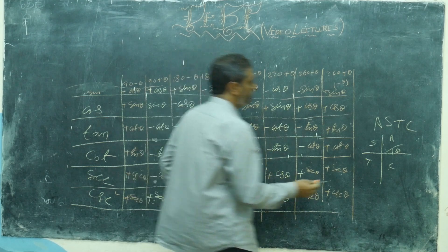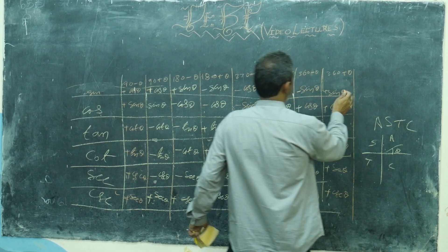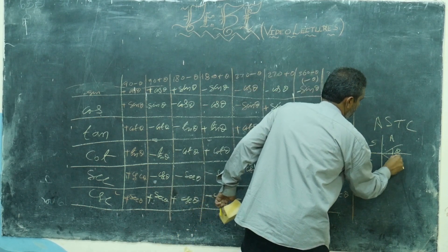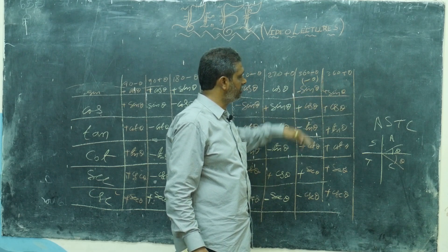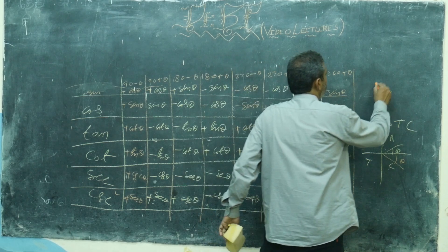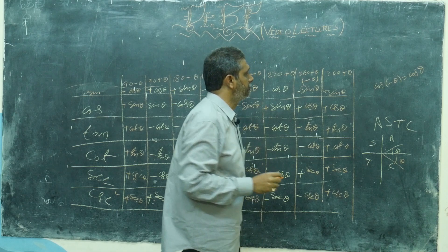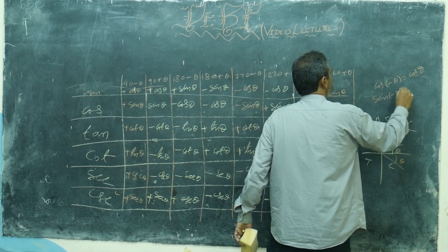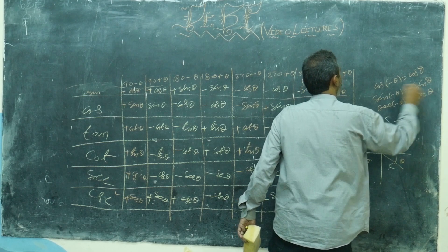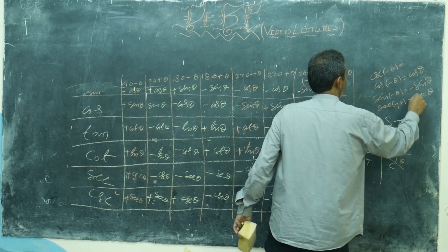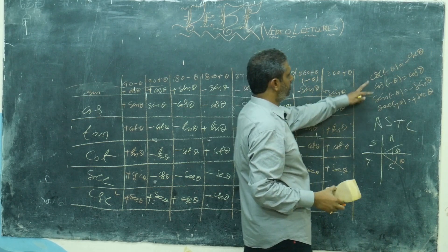Another thing to remember — sorry, there was a printing mistake; I wrote 260 but it should be 360. So 360 minus theta you can write as minus theta. For minus theta, remember: cos of minus theta equals cos theta. Sin of minus theta is minus sin theta. Secant of minus theta is plus secant theta. Cosecant of minus theta is minus cosecant theta. So cos and secant are positive; remaining all are negative for minus theta.